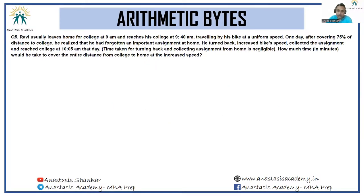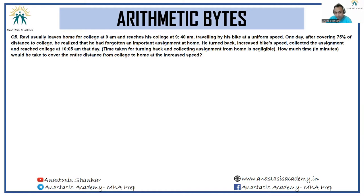Next: Ravi usually leaves home at 9 am and reaches college at 9:40 am by bike at uniform speed. One day, after covering 75 percent of the distance, he realizes he forgot an assignment. He turns back at increased speed, collects it, and reaches college at 10:05 am. Time for turning back is negligible. How long would it take to travel from college to home at the increased speed?